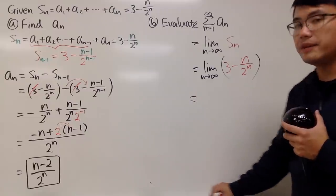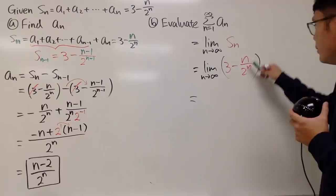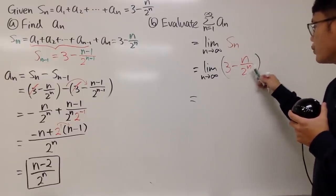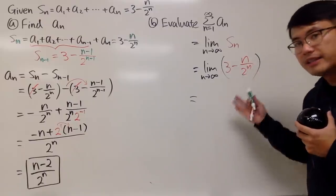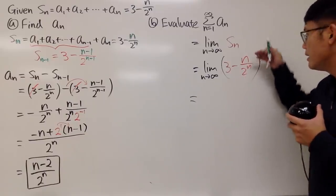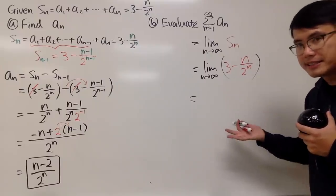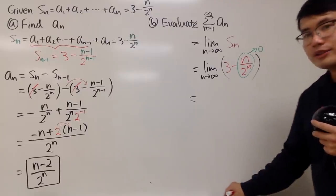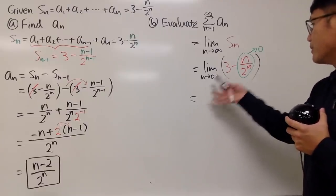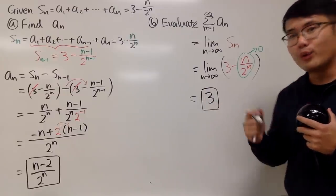Okay, as we can see, 3 is always 3. No problem on that. And we have $n/2^n$. On the bottom, it's an exponential, right? On the list, it's the $b^n$ power. And on the top right here, this is $n^1$ power. So by the list, we know that this right here will approach 0. So we just have to take the limit of 3. Of course, the final answer is just 3. And we are done.